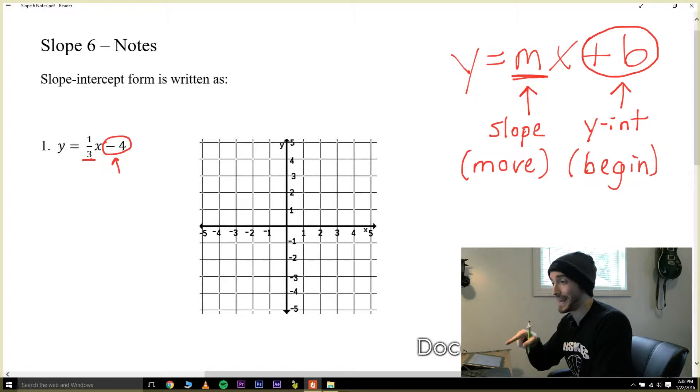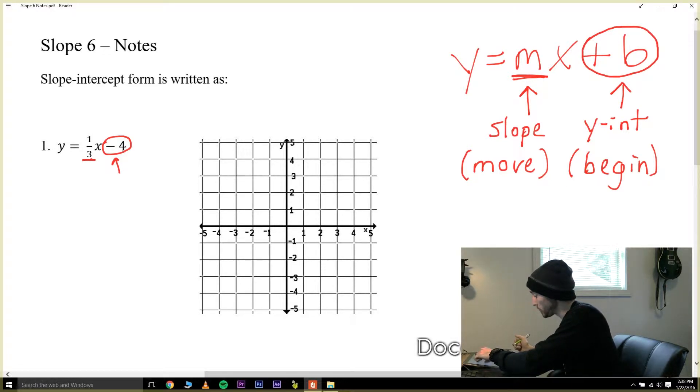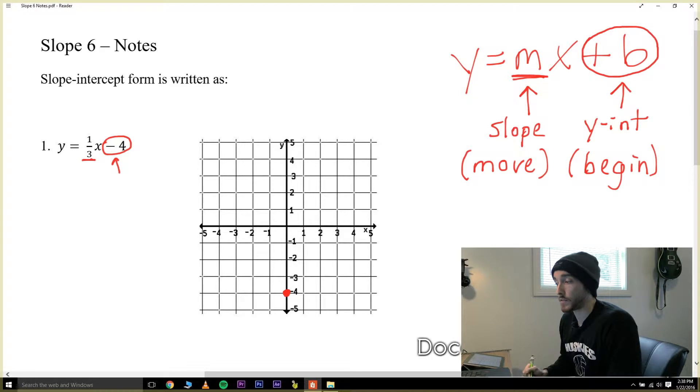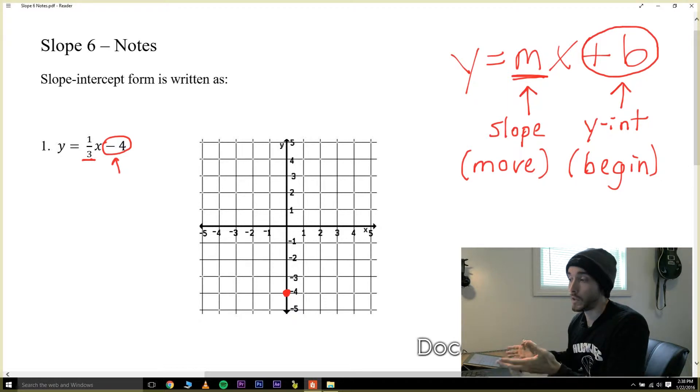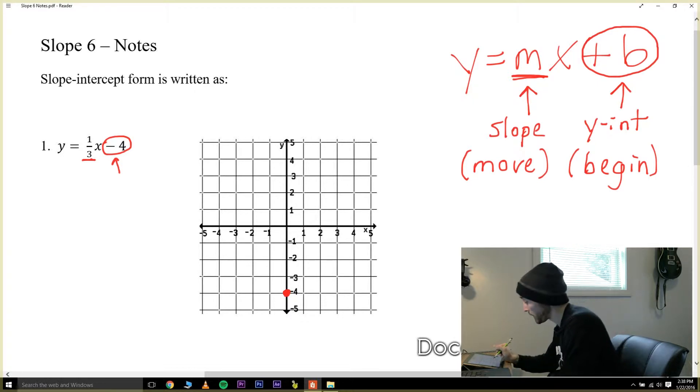So our first dot is going to be at negative four on the y-axis. Let's go to negative four on the y-axis and let's make a dot right there. We know that you need two points to draw a line and right there is one of them at negative four. But how do we know what direction the line is going from there? Well we know its slope is one-third. In other words it has a rise of one and a run of three. So from the point that we just made at negative four let's rise one and run three. I'm going to go up one and right three: one, two, three.